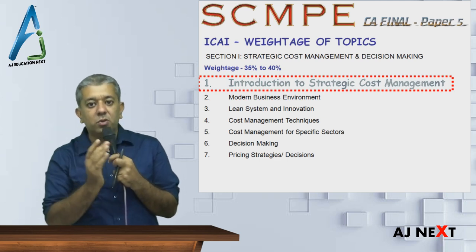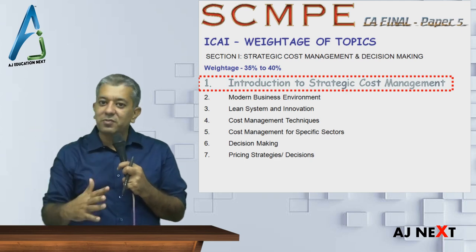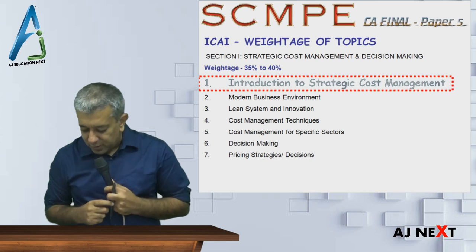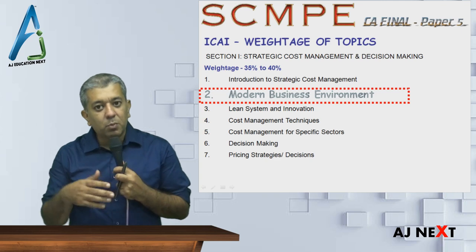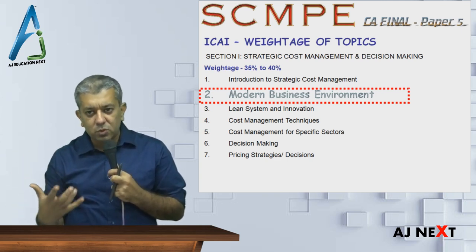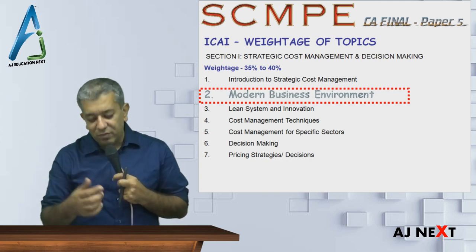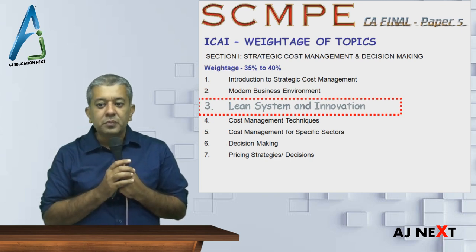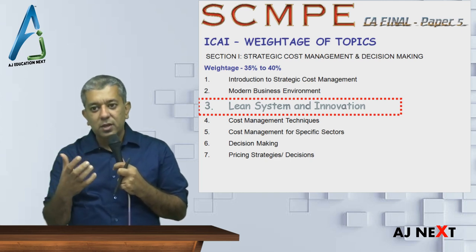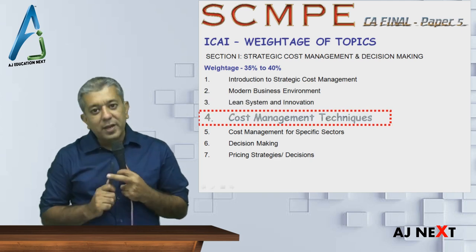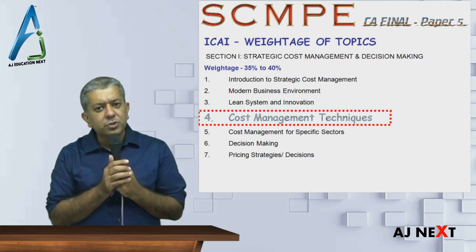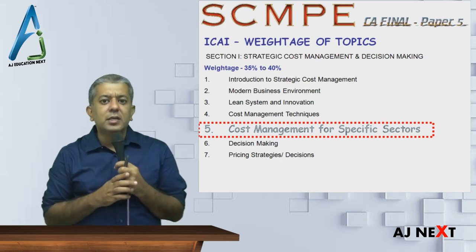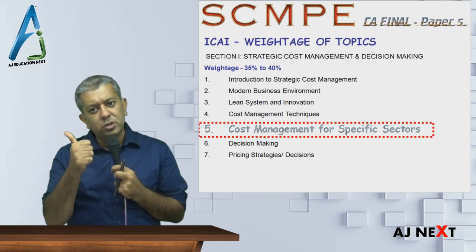First is introduction to this particular subject - what is the difference between old thoughts and new thoughts. Second is modern business environment, where we learn new types of businesses like e-commerce and how those are playing an important role. Third, lean systems and innovations - this introduces many new techniques like Kaizen costing, TPM, which help to save cost and run machines better. Fourth is cost management techniques - total quality management, Just-In-Time. Fifth is cost management for specific sectors: ICAI has given theory for agriculture, power, and IT sector.